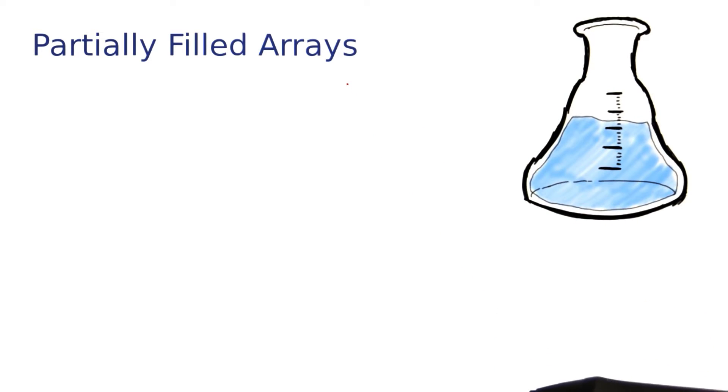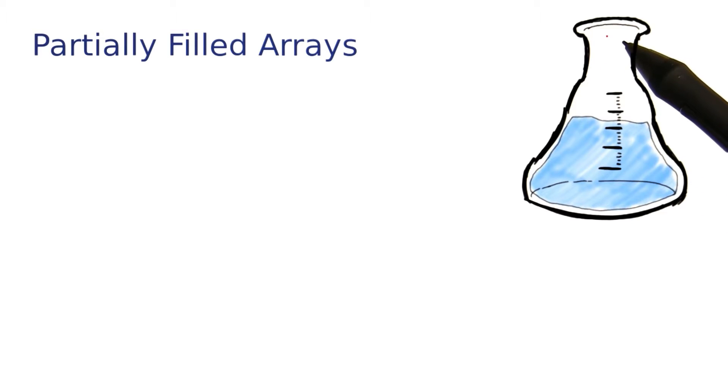We say such an array is partially filled, just like this beaker over here. You wouldn't want it to be filled up all the way to the rim. And in this situation, you need to keep track of two things.